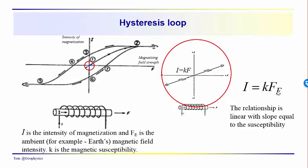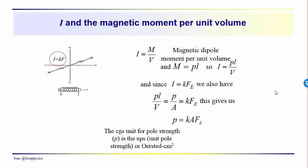The subscript E here is taken as the magnetic field intensity of the Earth. We have another definition for the intensity of magnetization: I is equal to the magnetic dipole moment per unit volume. We know that M is equal to P times L, the dipole moment, so I is equal to PL over V. And since I is equal to K times F sub B — this linear relationship — we can draw an equivalence: PL over V equals P over A, which equals K times F sub B. That gives us P equal to K times A times F sub B, where F sub B is the magnetic field intensity of the Earth.